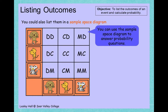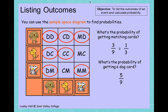Now we have a question: what is the probability of getting matching cards? There are nine possible outcomes altogether, and the matching cards would be dd, cc, or mm — they're both the same. So we write three over nine, and we get one over three. Next question: what's the probability of getting a dog card? We need to look at which cards have a dog — one, two, three, four, five. So five over nine. This is our probability of getting a dog card, written as a fraction.